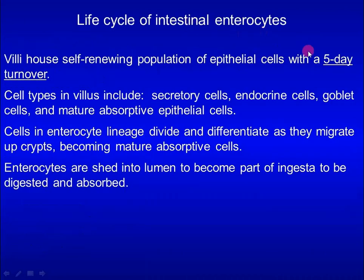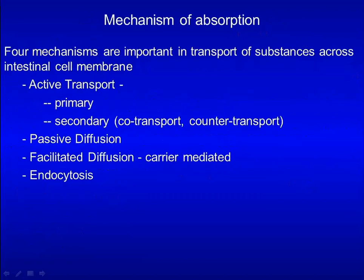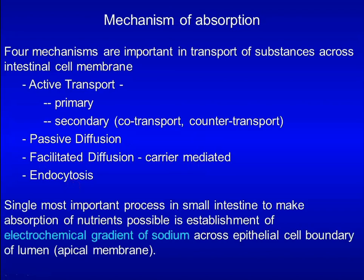Enterocytes turn over every five days and are shed into the lumen to become part of the digestive material to be digested and absorbed. Four mechanisms are important in transport of nutrients across the intestinal cell membrane: active transport, which includes primary active transport requiring ATP and secondary active transport requiring a sodium gradient; passive diffusion; facilitated diffusion using transporters; and endocytosis. The single most important process in the small intestine is the establishment of an electrochemical gradient of sodium across the apical membrane.